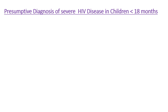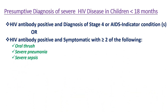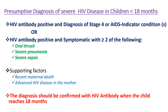Regarding presumptive diagnosis of severe HIV disease in children less than 18 months: HIV antibody positive with a diagnosis of stage 4 or AIDS indicator conditions, or HIV antibody positive with two or more of the following — oral rash, severe pneumonia, and severe sepsis — can provide a presumptive diagnosis of severe HIV disease until antibody testing is possible if DNA-PCR is unavailable. Supporting factors include recent maternal death and advancing HIV disease in the mother, and the diagnosis should be confirmed with HIV antibody when the child reaches 18 months.